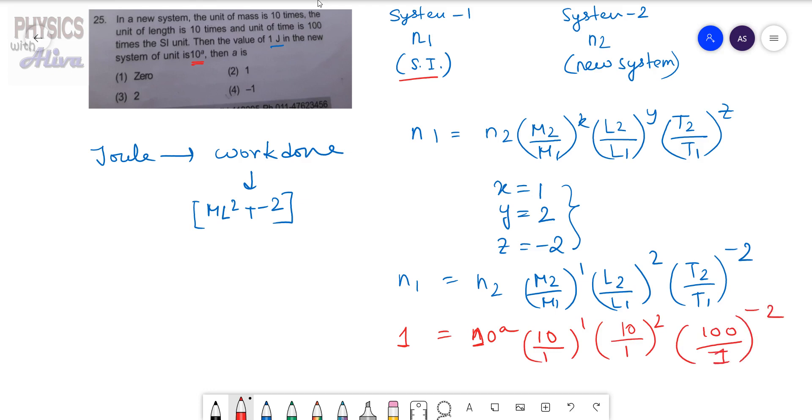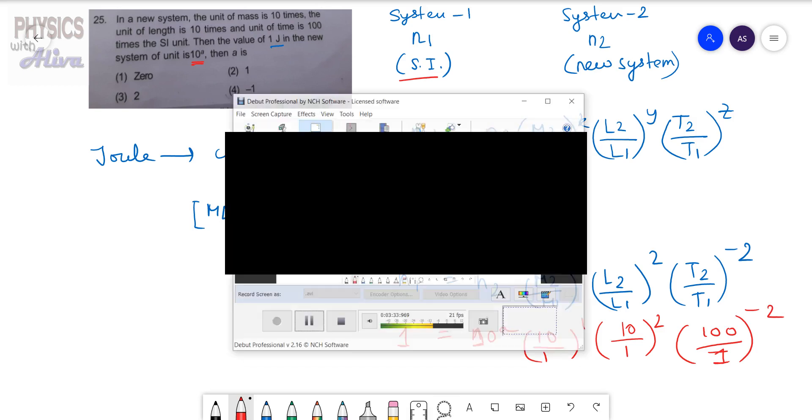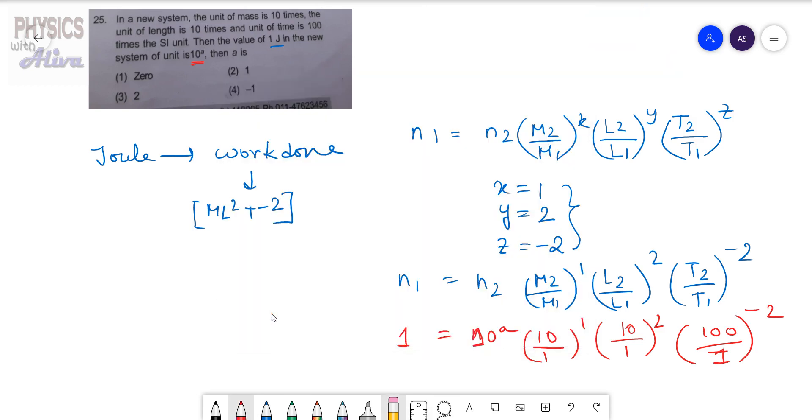So from this equation we can write: 1 equals 10 to the power a times (10 to the power 1) times (10 to the power 2) times (100 is 10 squared to the power minus 2). So here 10 to the power (a plus 1 plus 2 minus 4), and here it is 1.